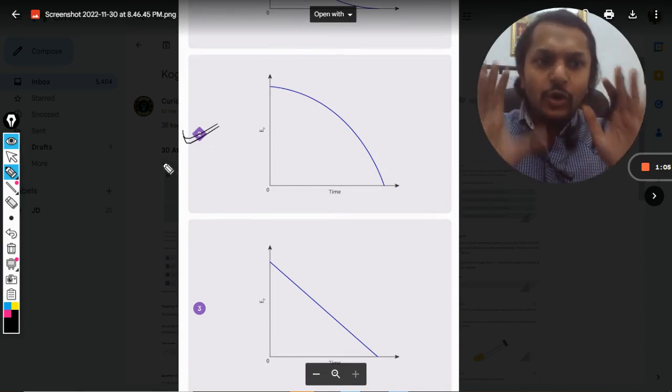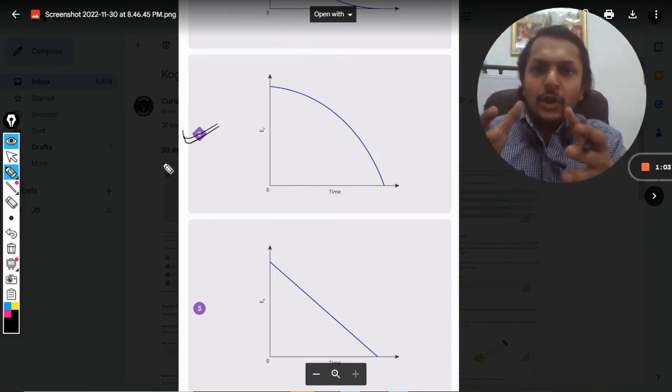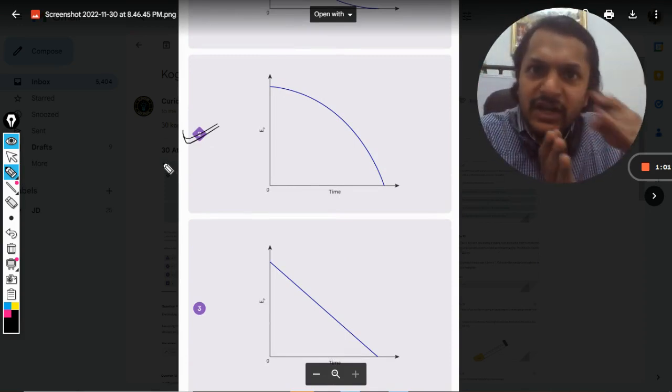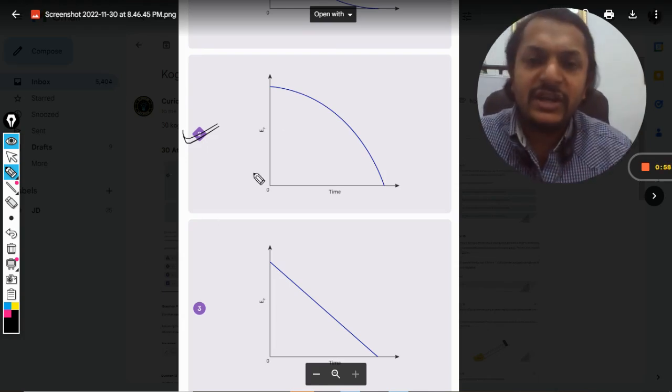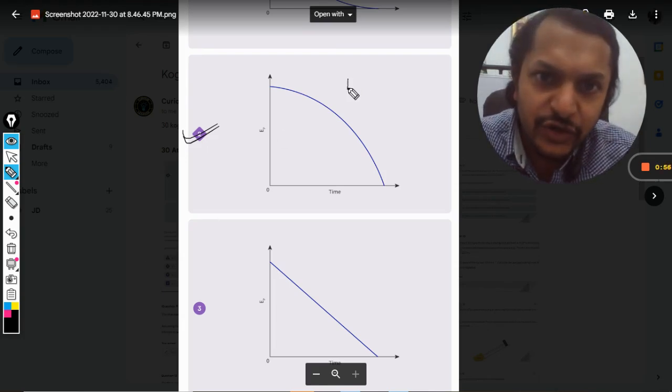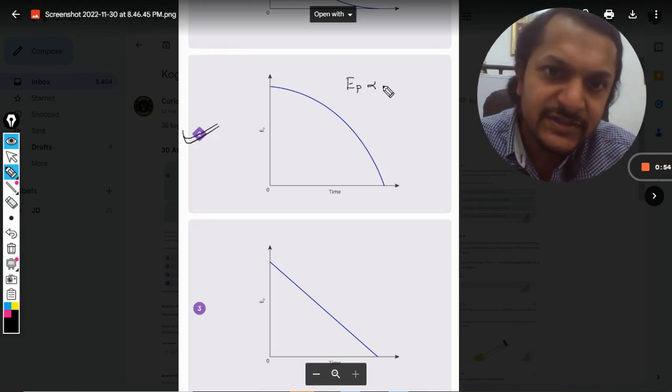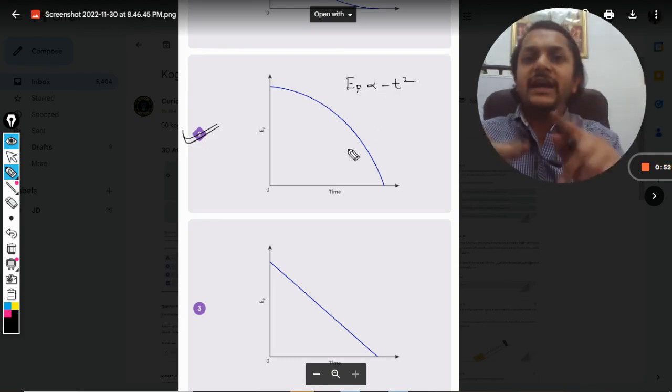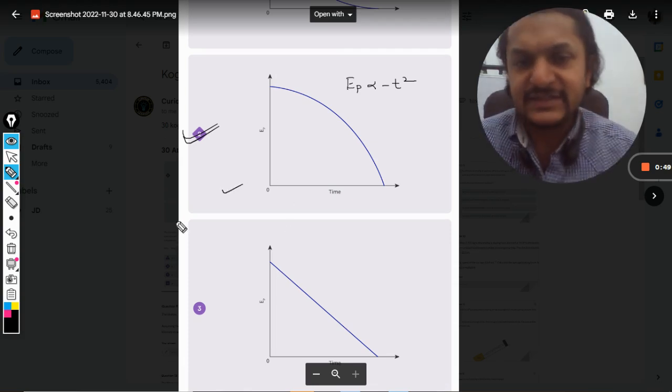And now you know why the answer is 2. Because in option number 4, after some time, the graph is becoming a straight line. It can never become a straight line. The variation for your potential energy is negative T squared, so it is a negative parabola.